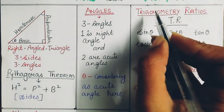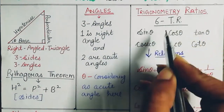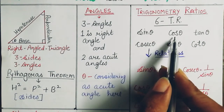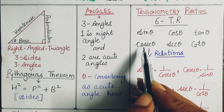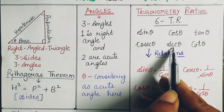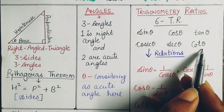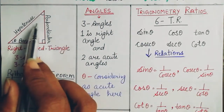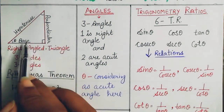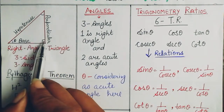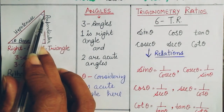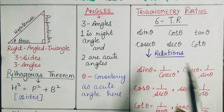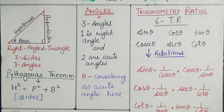After that we will discuss trigonometry ratios. There are six trigonometry ratios: sine theta, cos theta, tangent theta, cosecant theta, secant theta, and cot theta. These theta values are the two acute angles of the right angle triangle, and which one is theta depends on which side you take as the base.